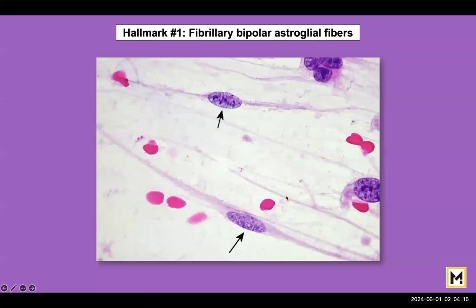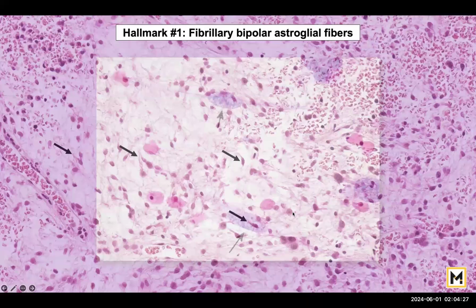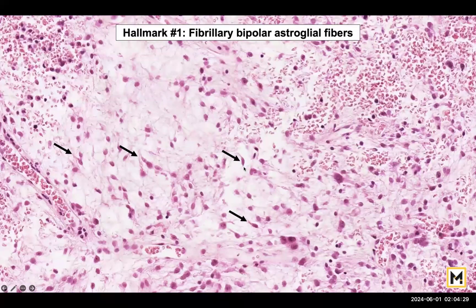This is a higher magnification where you can see the bipolar appearance. These are the tumor cells and you can see that the glial fibers are coming out from both ends. On histology you would be able to see them in the form of these small cells, and you can see the bipolar appearance along with the hair-like projections coming out of multiple cells.